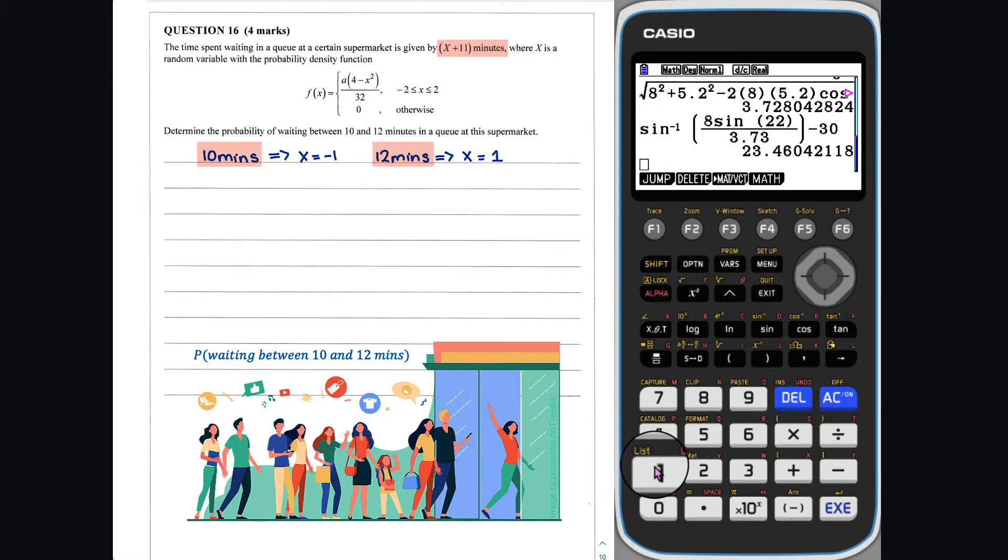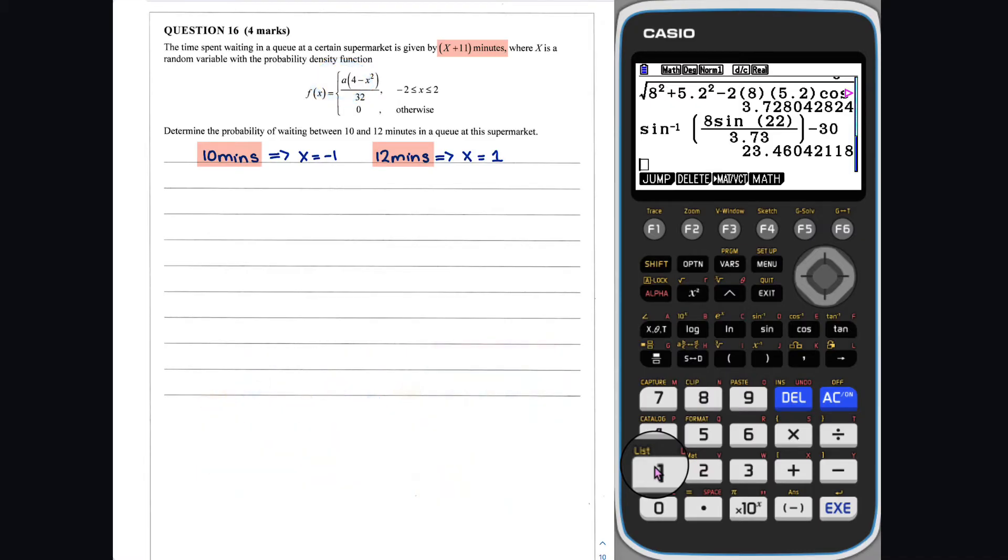Before we work out the required probability, we first need to determine the value of a. f of x is a probability density function, and thus, we know that.